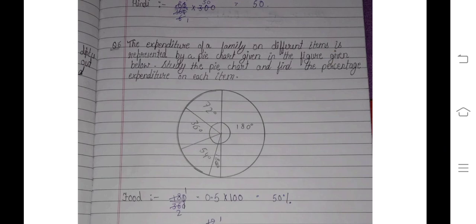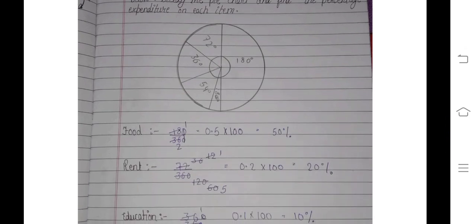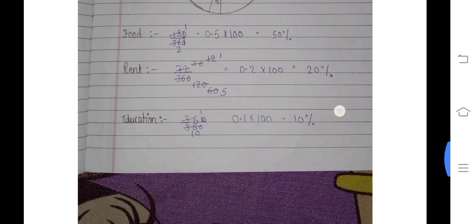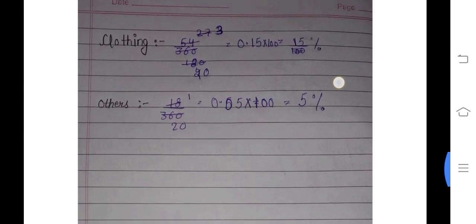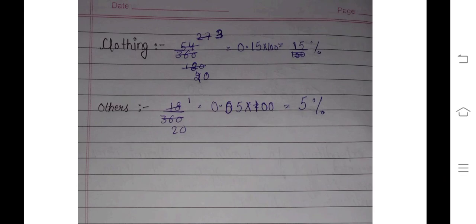Question number six is the same. The expenditure of the family on different items is represented by a pie chart given in the figure. Study the pie chart and find the percentage expenditure in each item. We have pie chart. For food, we calculate 180 upon 360 which is 0.5, multiply by 100 percent gives us 50 percent. Rent is 20 percent, education is 10 percent, clothing is 15 percent, and other is 5 percent.